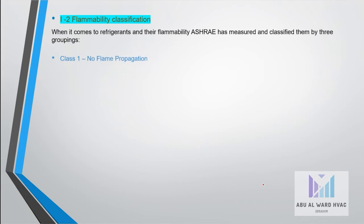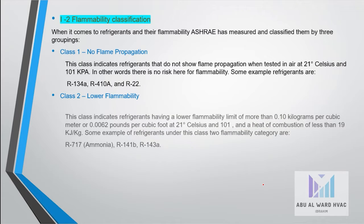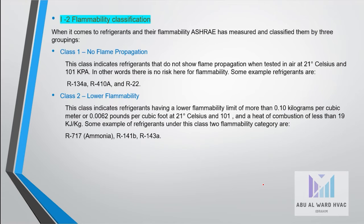The second classification is flammability, according to ASHRAE. Class 1 is non-flame propagation: this class indicates refrigerants that do not show flame propagation when tested in air at 21°C and 101 kPa, such as R22. Class 2 indicates lower flammability, such as R717.